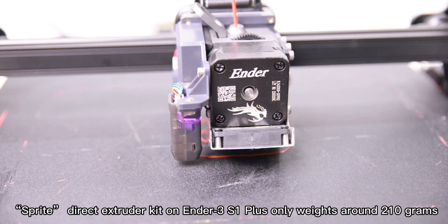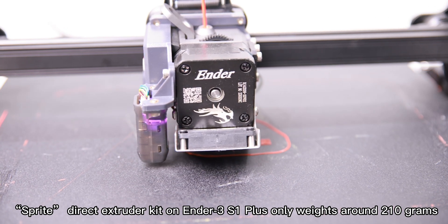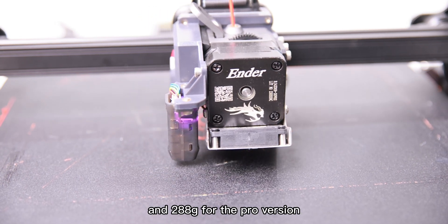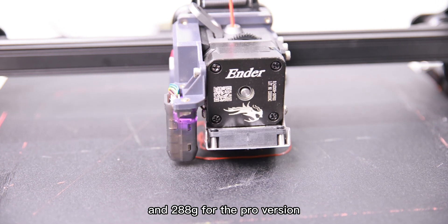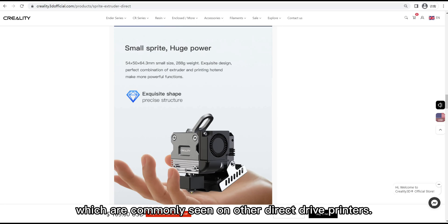But that's not the case for Ender 3 S1 Plus. The Sprite Direct Extruder Kit on Ender 3 S1 Plus only weighs around 210 grams, and 288 grams for the Pro version. That's why I barely experience ringing and ghosting issues on the Plus, which are commonly seen on other Direct Drive printers.